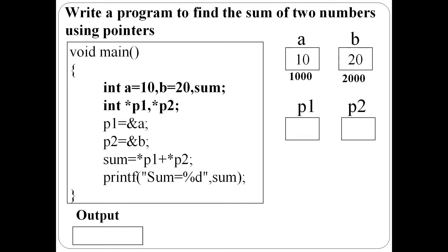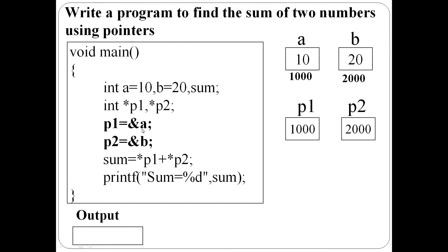Suppose the address of a is equal to 1000 and b is equal to 2000. Then there are two pointers: int star p1 and p2. p1 is equal to address of a — a has address 1000, so p1 points to 1000. p2 is equal to address of b — b has address 2000, so p2 points to 2000.